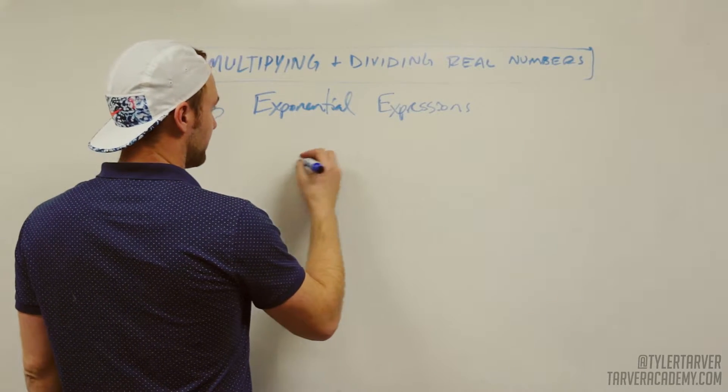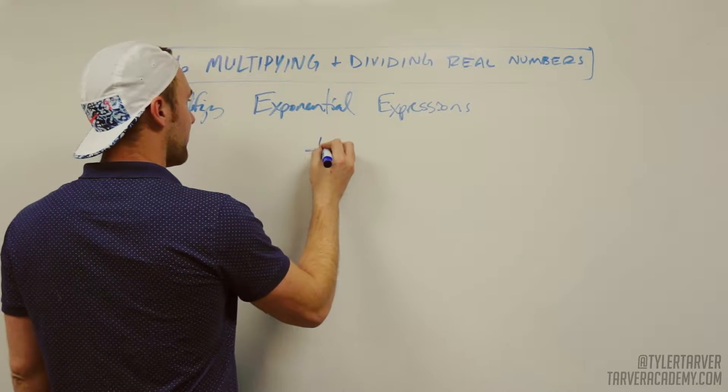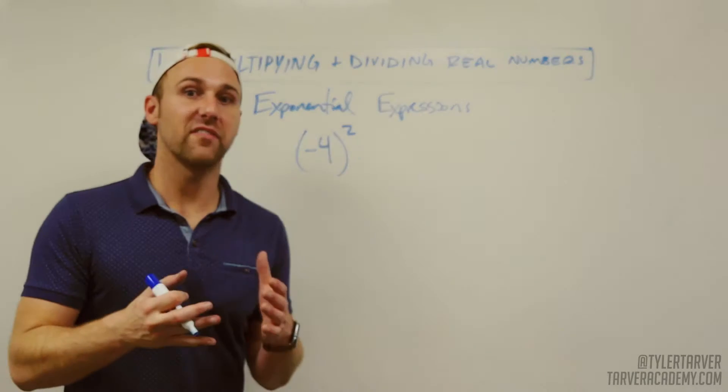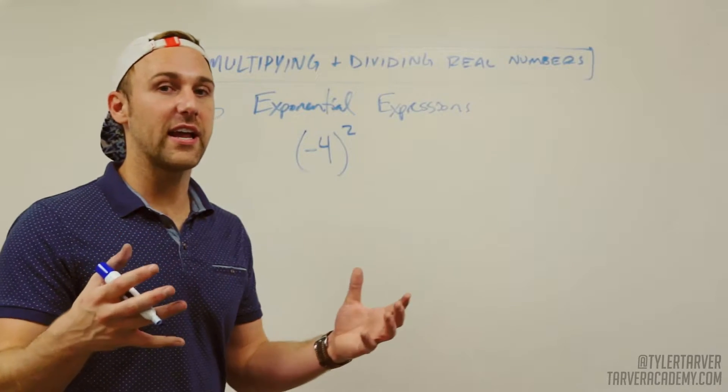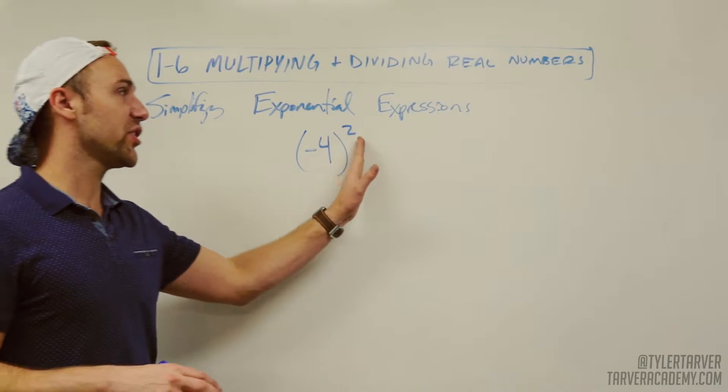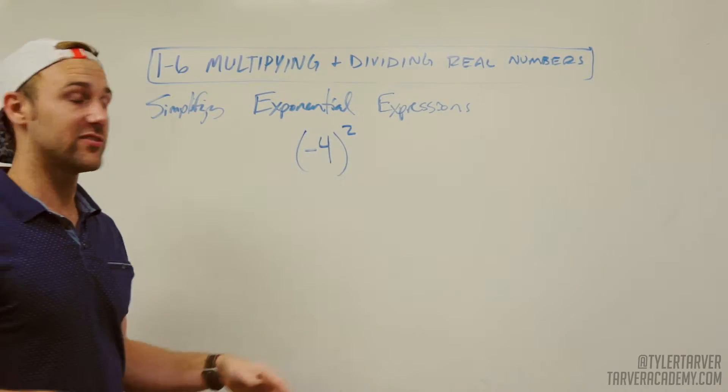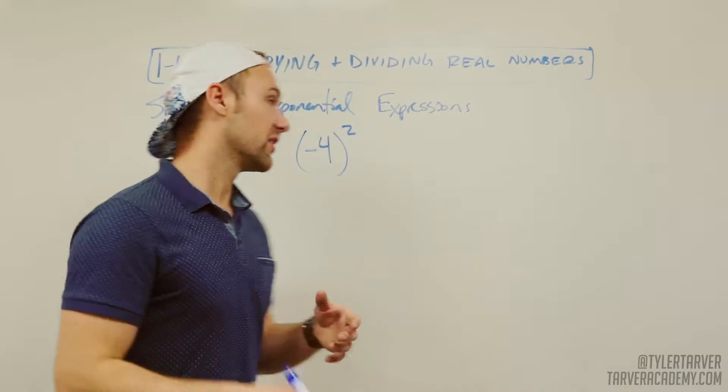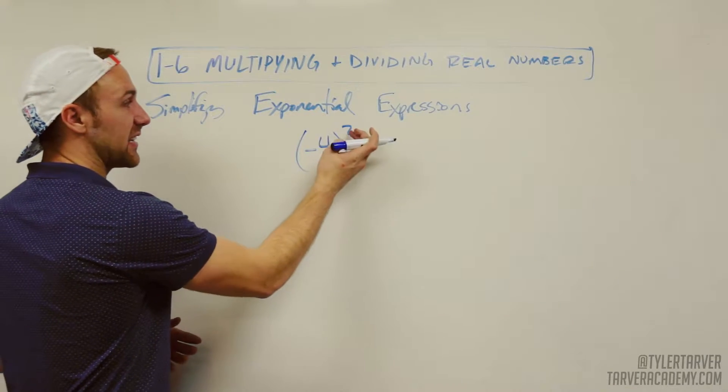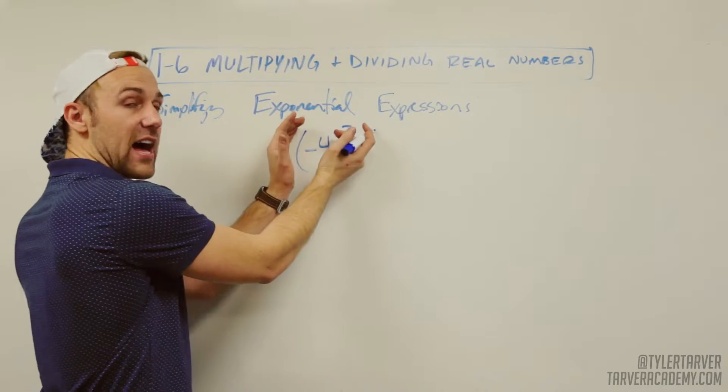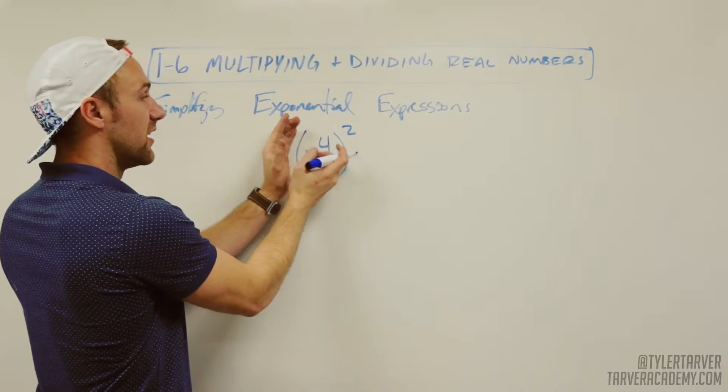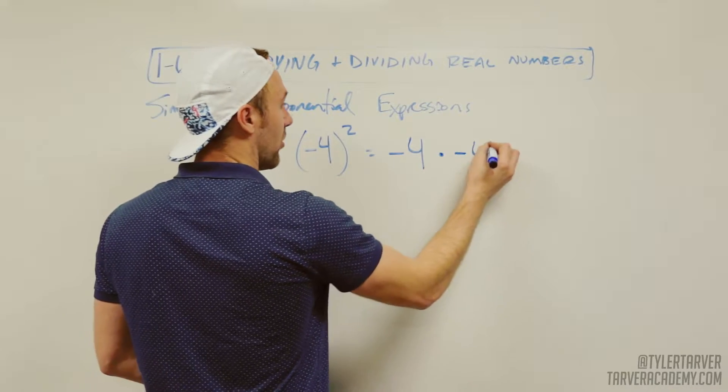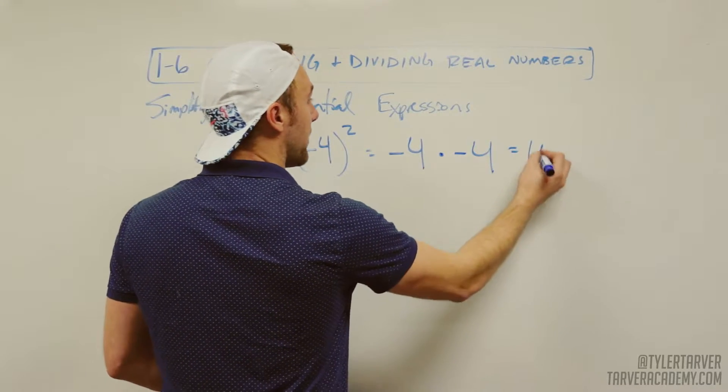So let's start with negative four squared. If I wanted to simplify this, it would be breaking it down and then multiplying. The part that makes it tricky is that two is outside of the negative. Usually if it's like four squared, you're like oh that's 16, four times four. This one's a little different because since it's outside the parentheses, it's attached to everything inside of the parentheses, which includes that negative. So that's the same as saying negative four times negative four, which is still going to be a positive 16.